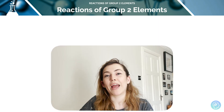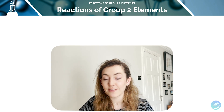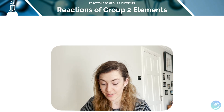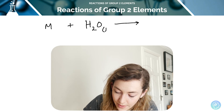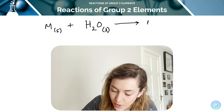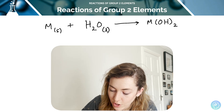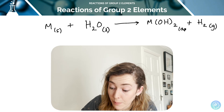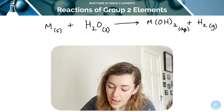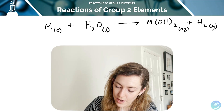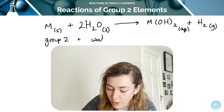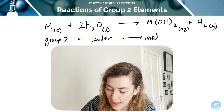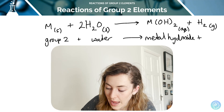Group 2 elements also react readily with water to form metal hydroxides and hydrogen — an important reaction to know. If M represents any group 2 metal, solid M reacts with liquid water to make M(OH)2 and hydrogen gas. We balance by putting a 2 in front of H2O. So a group 2 metal plus water always gives a metal hydroxide and hydrogen.